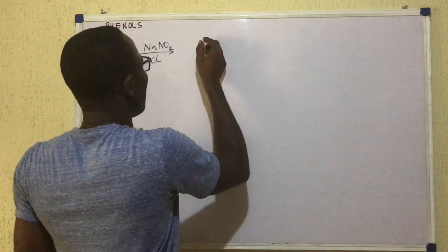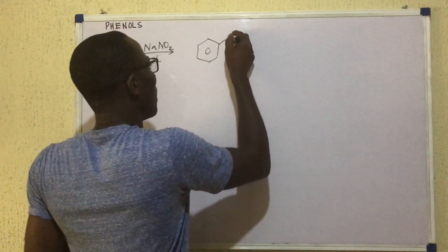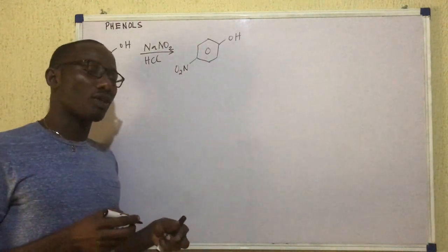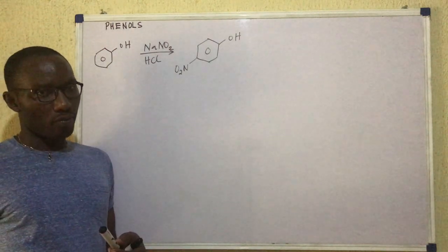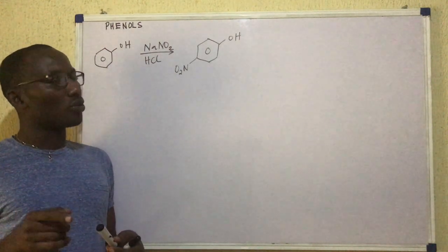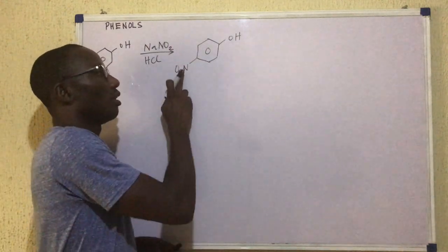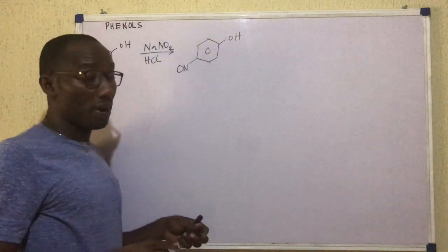And in that case, our product will be this. We have OH and then here we have NO. That compound is called para-nitrosophenol. NO. Para-nitrosophenol.